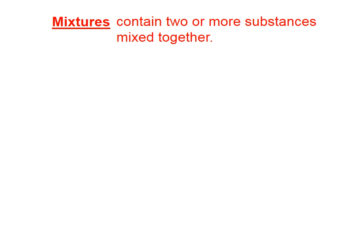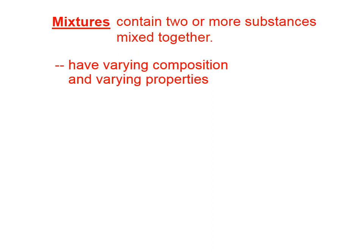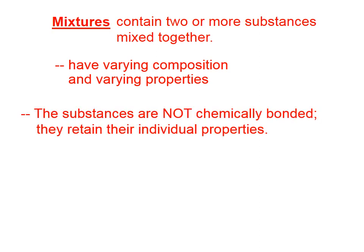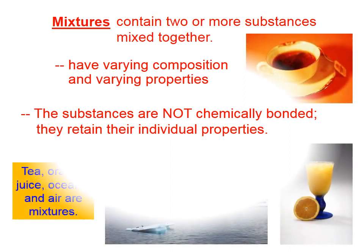A mixture contains two or more substances that are mixed together. These have varying composition and varying properties because the substances that make up the mixture are not chemically bonded to each other. They're just in the same room but not holding hands — they retain their individual properties.